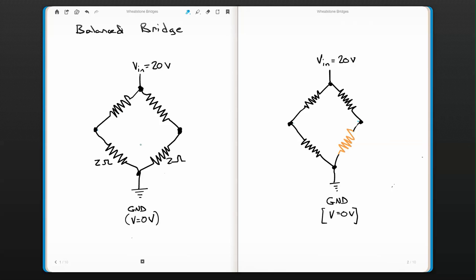So here is what we call a balanced bridge. Why is this balanced? Because I've got two ohms, two ohms. I'm going to put another two ohm resistor up here and another two ohm resistor here. What does that do for me?